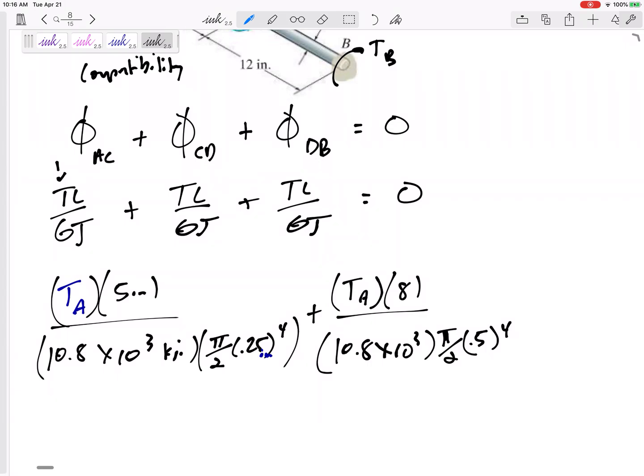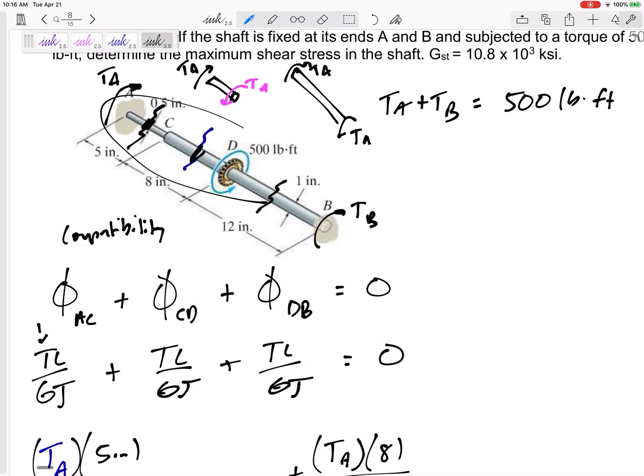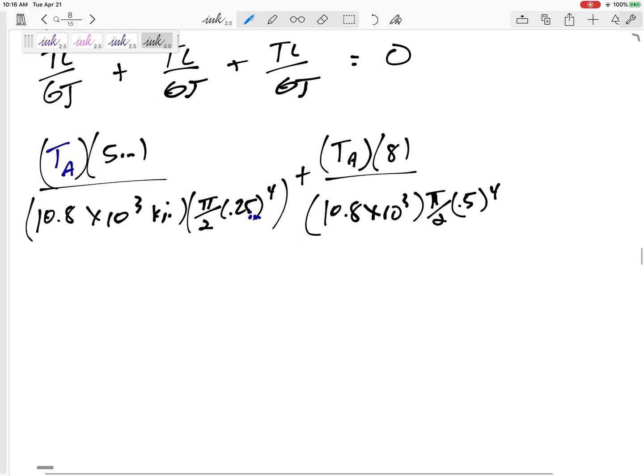All right, now let's look at the TL of GJ inside section DB. I could cut it right here. I could keep this half of it. Or I could keep this half of it, but we'll see how it will work out the same. I'm going to keep this half of it. I have a TB right here, so that means I need a TB right here. And so do you see that this, using my right hand rule, my thumb is pointing into that cut. So this is a negative TB right here. A negative TB times L over G, 10 to the 3, J pi by 2, 0.5 to the 4th equals 0.